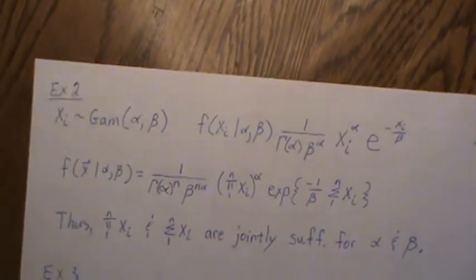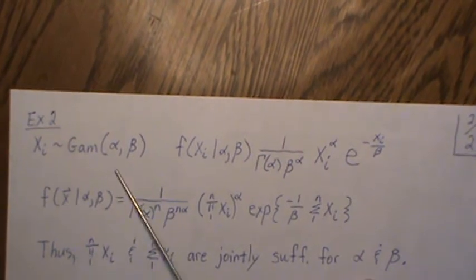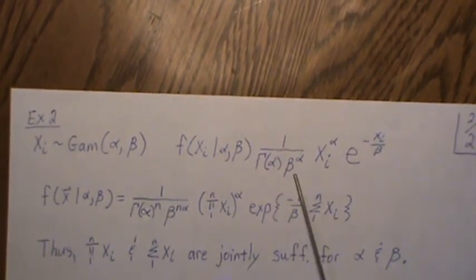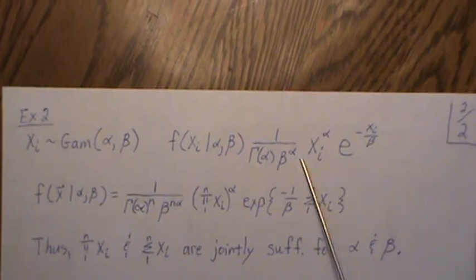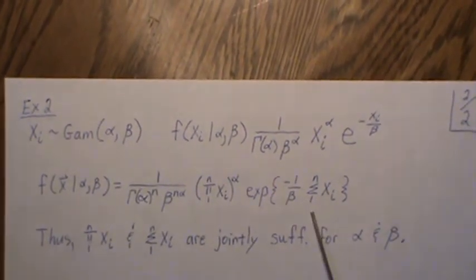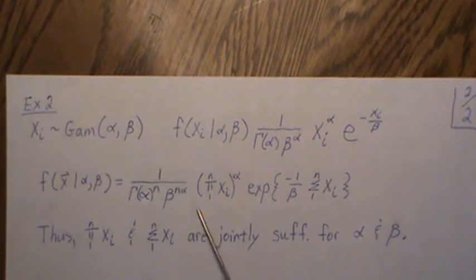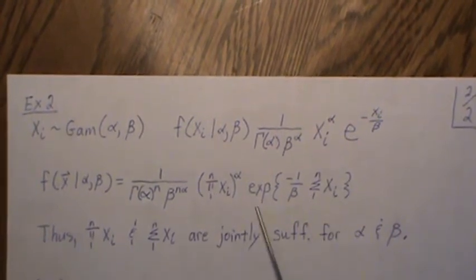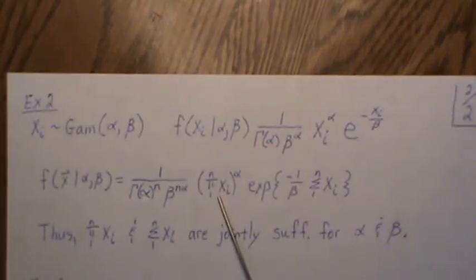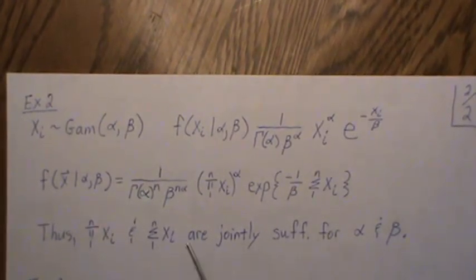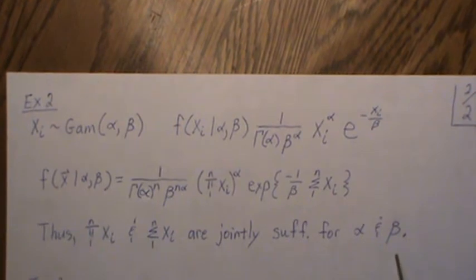The next example is the gamma distribution. Let Xi be gamma with density as given. The joint density is the product of all these terms, which simplifies to an expression showing that the product of the Xi's and the sum of the Xi's are jointly sufficient for alpha and beta.